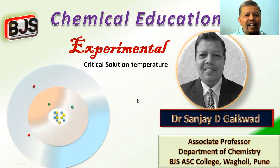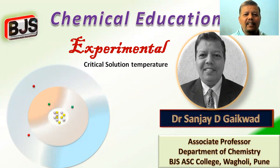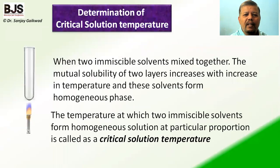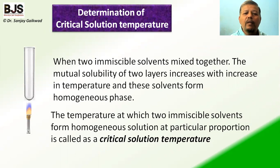Hello, welcome to chemical education. In this video, we are observing some experimental parts. The first part is critical solution temperature. The temperature at which two immiscible solvents form a homogeneous solution at a particular temperature and at a particular proportion is called the critical solution temperature.